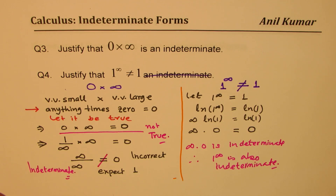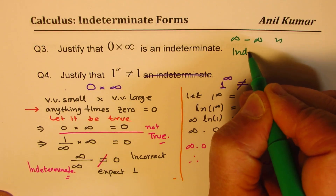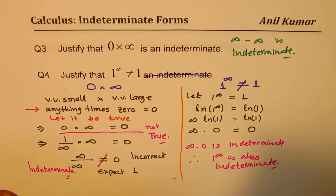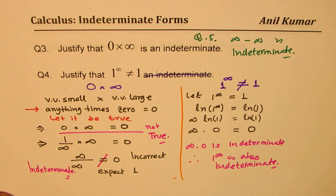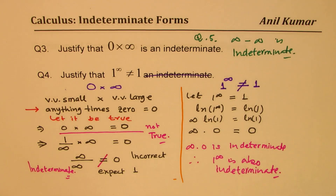Similarly, we could also prove that infinity minus infinity is indeterminate. I'll leave that as an exercise — question number 5 for you. You need to prove that infinity minus infinity is indeterminate. The idea: take the log of both sides and prove it out.